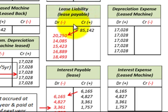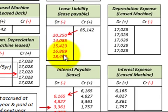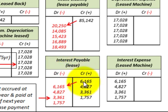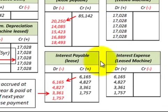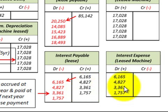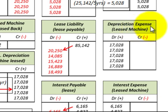The lease liability is credited for $85,142. We go to the amortization schedule to find the amount by which the lease payable is reduced each period. Interest payable is credited — then debited out — using the interest portion from the amortization schedule, as interest is accrued at year-end and paid at the beginning of the next year with the lease payments. Finally, depreciation expense is debited for $17,028 per year on the leased asset.